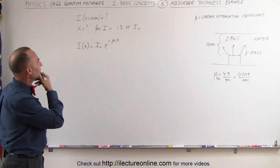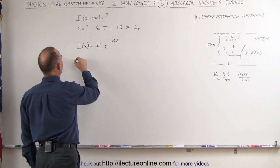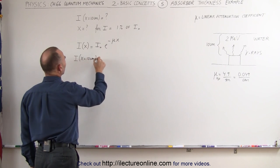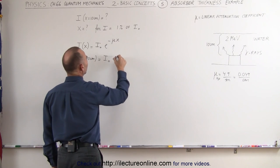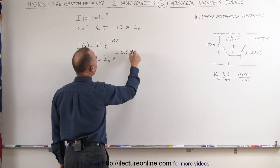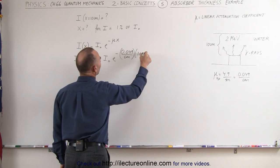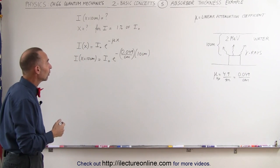Plugging in the values, we want to do it as a fraction of I sub not so I when x is equal to 10 centimeters is equal to the original intensity at the source times e to the minus mu is 0.049 per centimeters times the thickness 10 centimeters. Notice that the centimeters cancels out and you simply have e to a number.